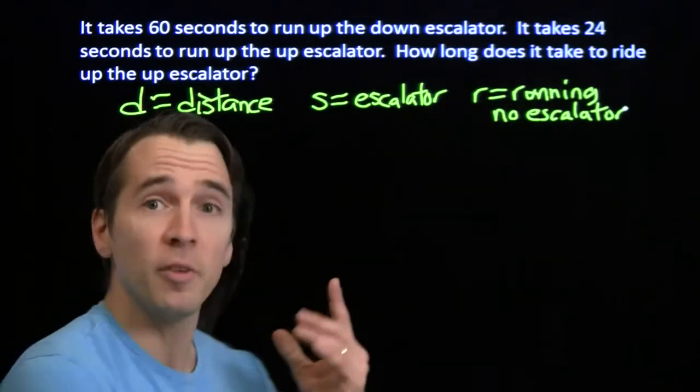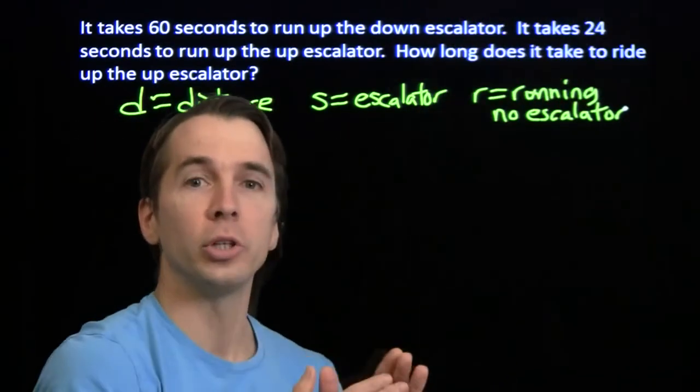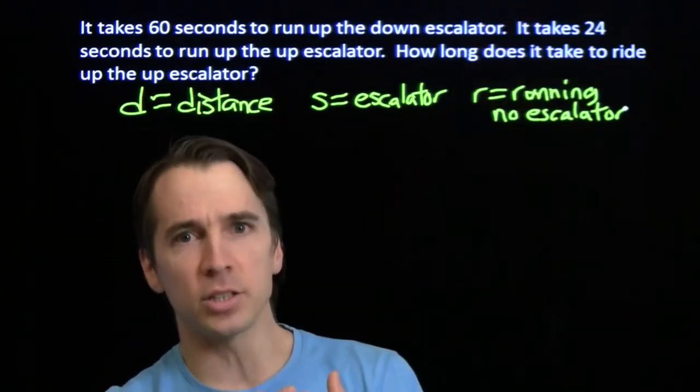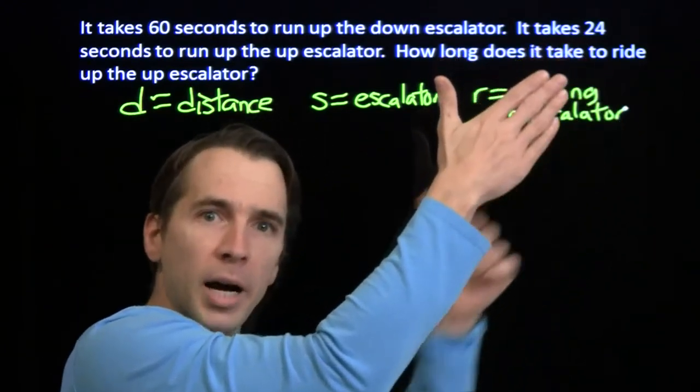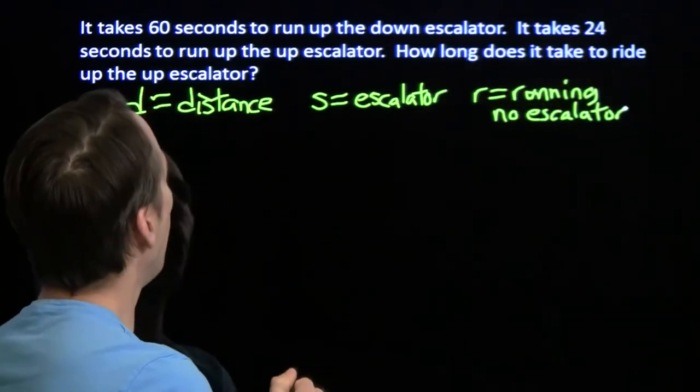So that when you're running up the escalator, your actual speed is the sum of these, because there's you running, and the escalator also pulling you up. But when you're running up the down escalator, it's the difference. Your speed is the difference of these. It's r minus s, because it's you running minus the escalator taking you away.